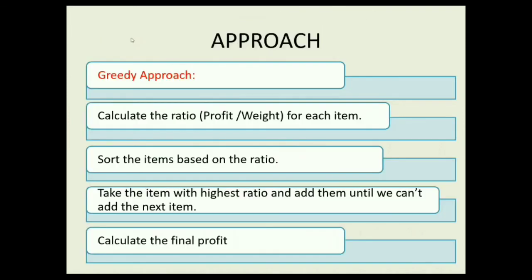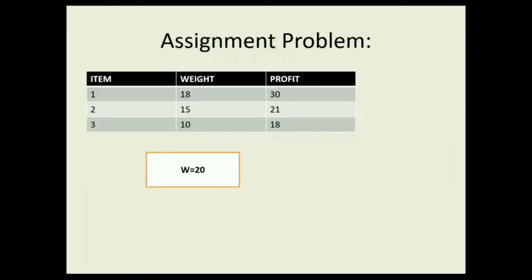The approach we used to solve this problem is the greedy technique. First, calculate the ratio — which is profit divided by weight — then select items in decreasing ratio order, and finally calculate the total profit. If you have any doubt, please comment. I have given one assignment problem for you — please calculate and check.